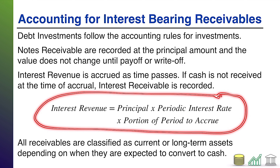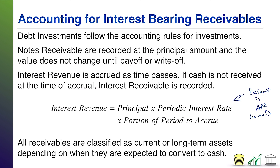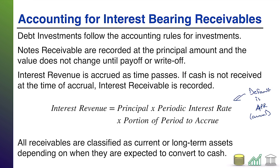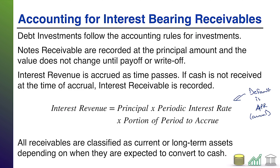Here's the math: interest revenue is simply the principal times the periodic interest rate. Be careful how your rate is stated — by default it's APR, annual percentage rate. So if you see an interest percentage with no specification, assume annual. You might see interest written in other terms such as per quarter or per month, but often it's just annual APR. You take the principal times the periodic interest rate times the portion of the period that has gone by — that tells you how much revenue to accrue.